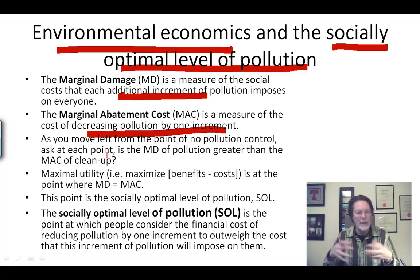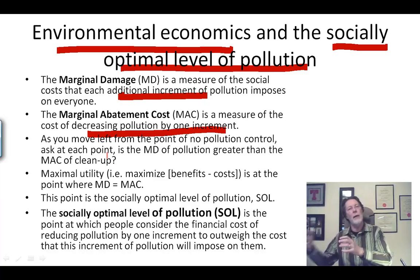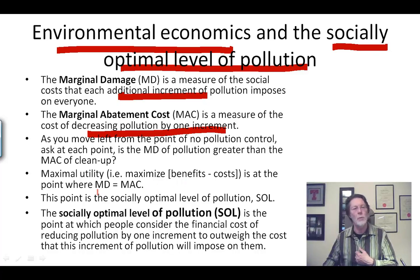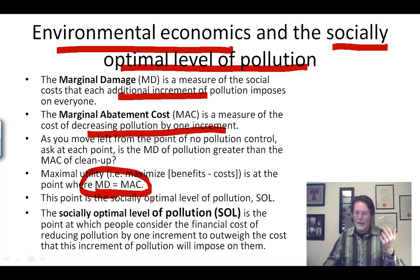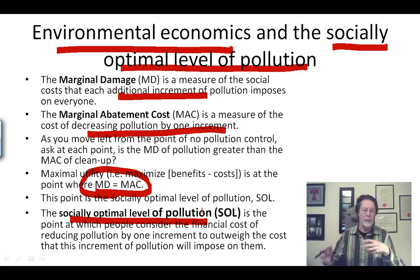It's marginalist economics, so basically: if the marginal damages are greater than the marginal abatement cost of cleanup, then you should probably clean up. But once cleanup costs are greater than the damage costs — all measured in dollars and cents using willingness to pay — you should stop. The maximum utility is where marginal damages equals marginal abatement costs, and this point is called the socially optimal level of pollution.